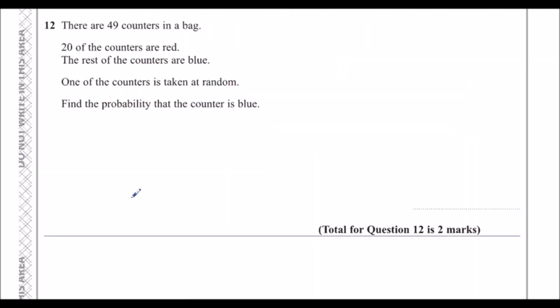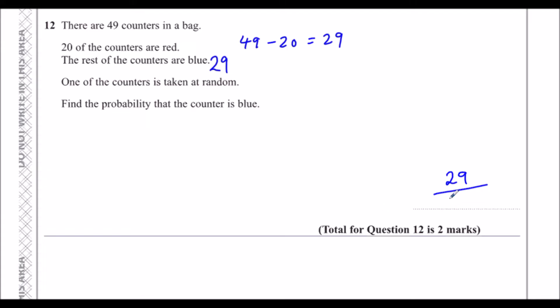Question 12: There are 49 counters in a bag; 20 are red, the rest are blue. 49 take away 20 is 29 blue counters. One counter is taken at random — find the probability that it's blue. That's 29 out of 49.